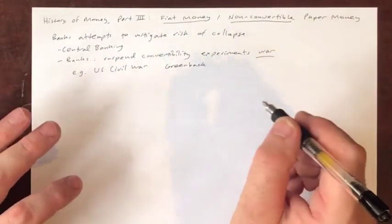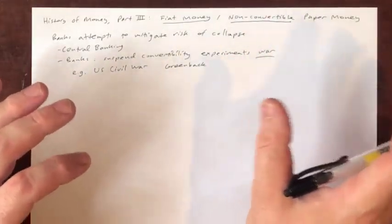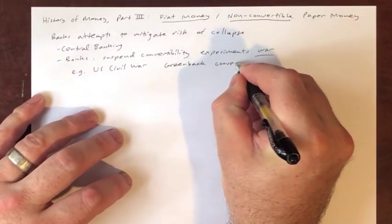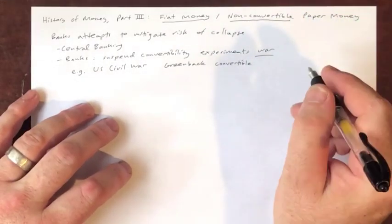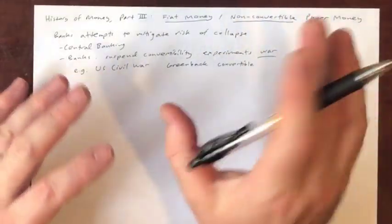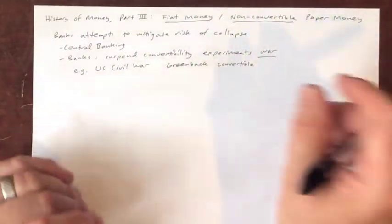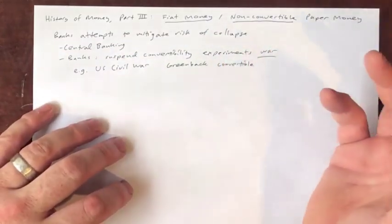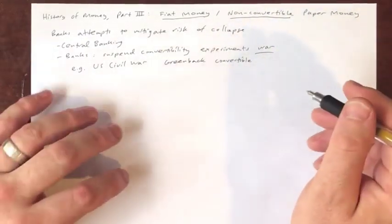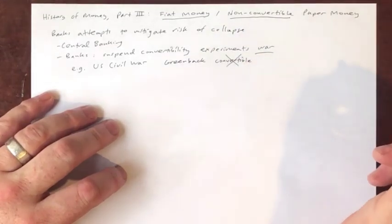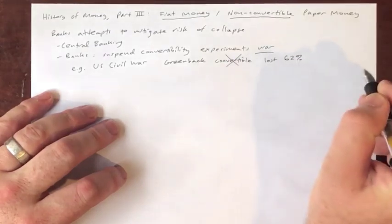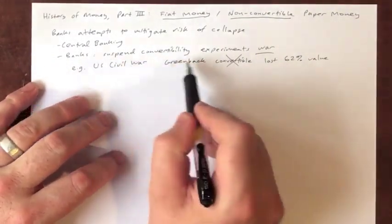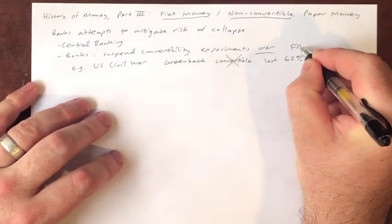Now the greenback was initially convertible. The problem with introducing a new currency specifically to run up a huge debt is: what makes people have confidence that you're actually going to pay it back? So initially the greenback was convertible to gold at a set rate, and in addition to that, it also paid interest — kind of like a hybrid between a currency and a bond, but also intended to be a means of payment.